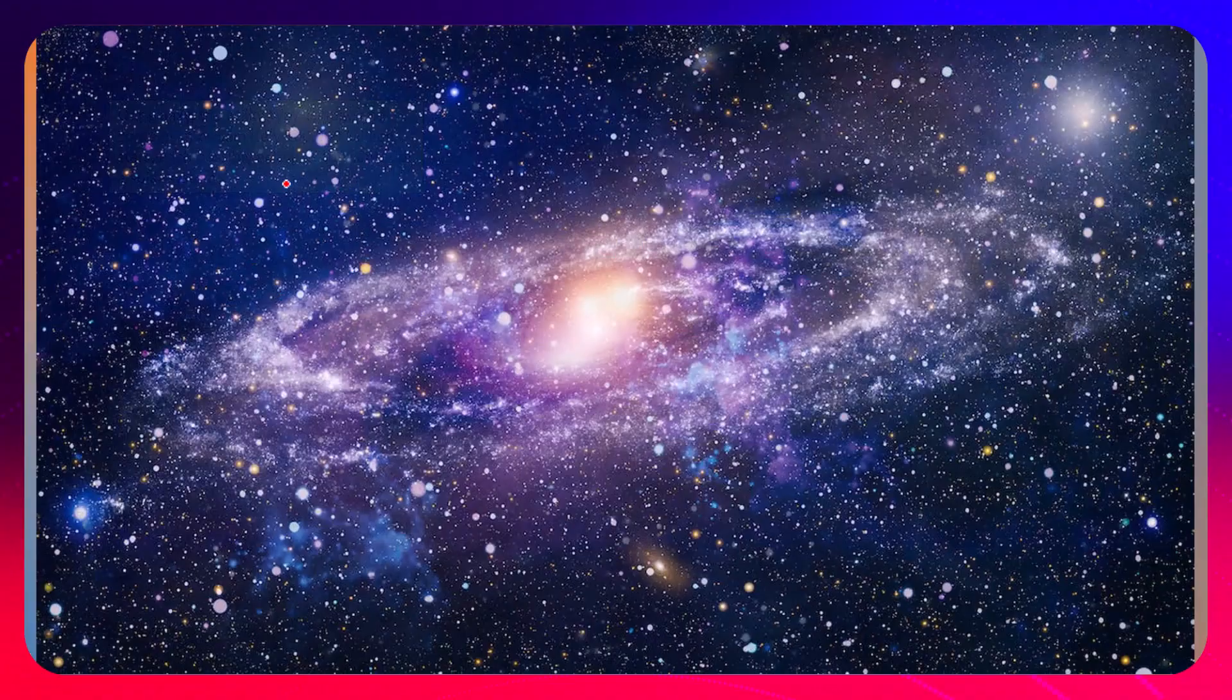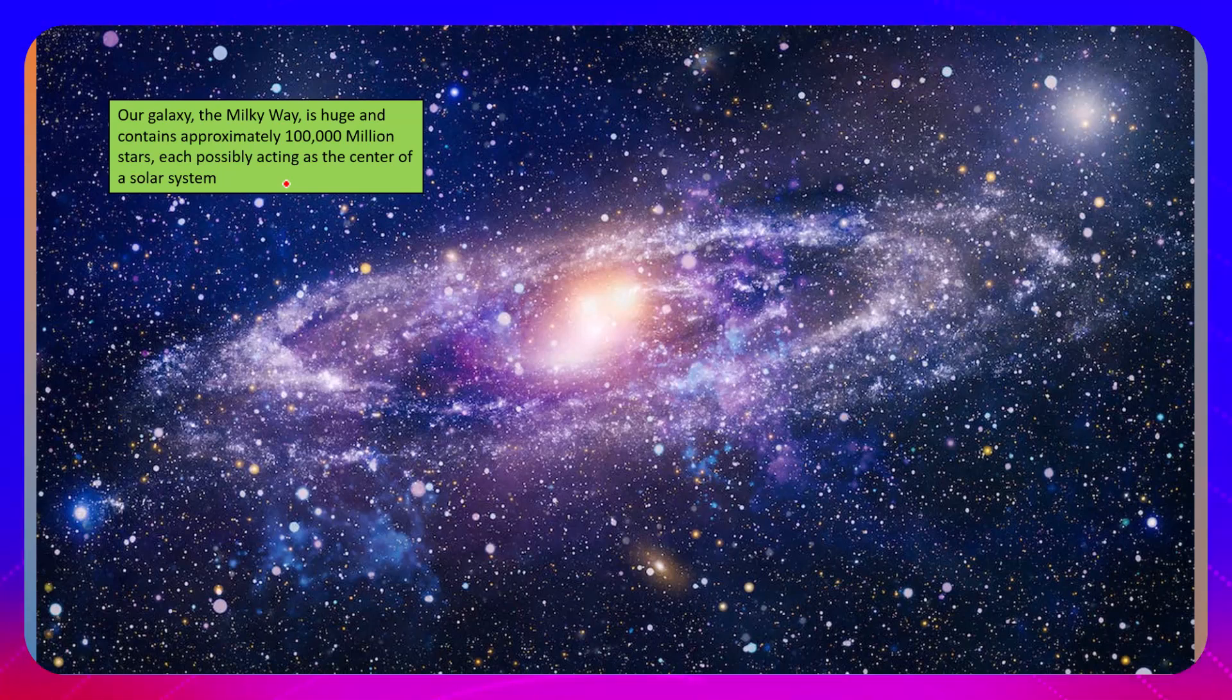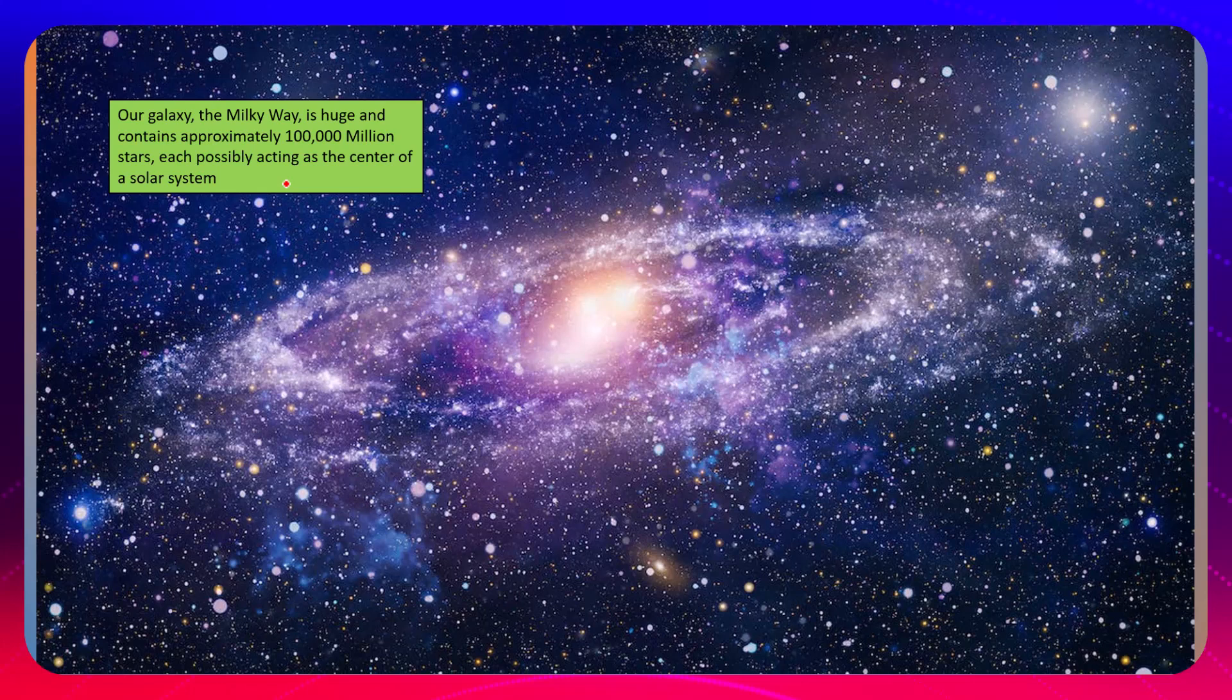So all solar systems including ours, the galaxy Milky Way is huge and vast and contains approximately a hundred thousand million stars, each possibly acting as the center of an individual solar system. So within our galaxy alone there is a hundred thousand million chances that each one of the stars independently is acting as the center of its own solar system.